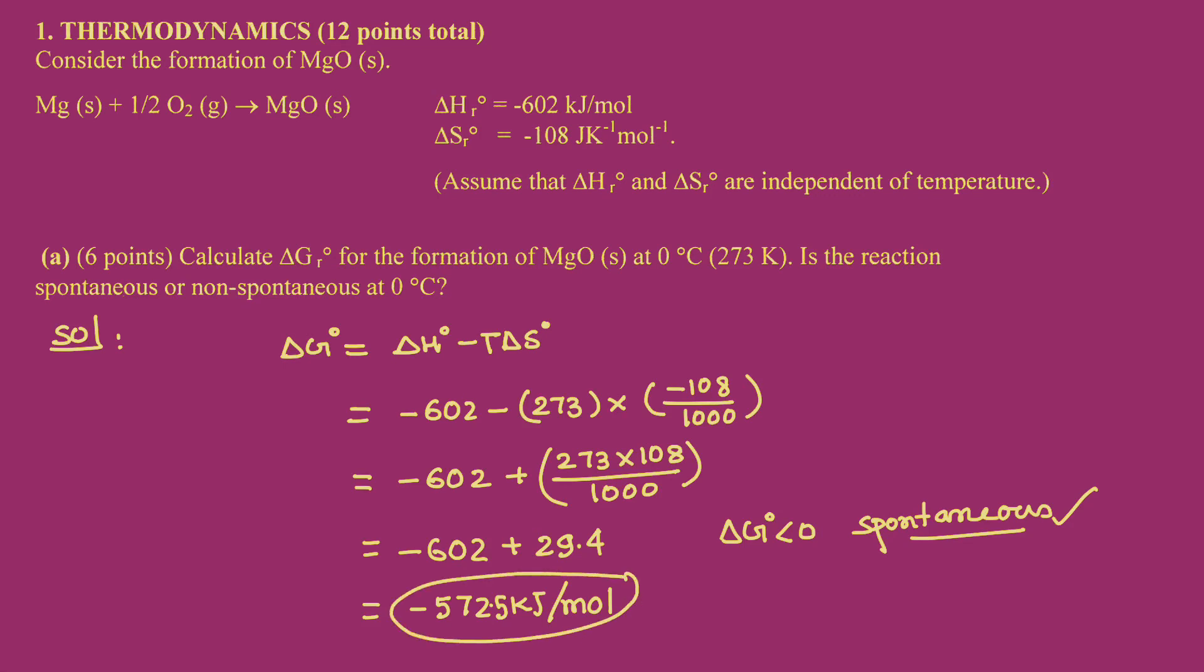So this is the answer for the first part that they have asked, the Gibbs free energy change for the formation of MgO, and is this reaction spontaneous or non-spontaneous at 0 degree centigrade? Since we are getting ΔG° value less than 0 at 0 degree centigrade, the process is spontaneous. Thank you.